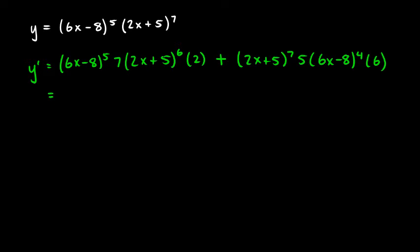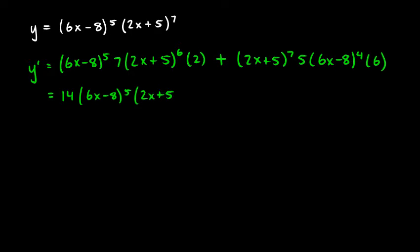Now we simplify with some algebra. First, combine the coefficients: 7 times 2 gives 14, and 5 times 6 gives 30. Rewriting, the first term is 14 times (6x minus 8) to the fifth times (2x plus 5) to the sixth, and the second term is 30 times (2x plus 5) to the seventh times (6x minus 8) to the fourth.